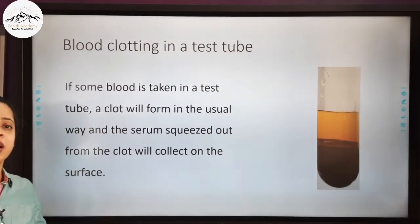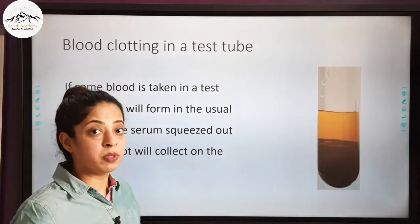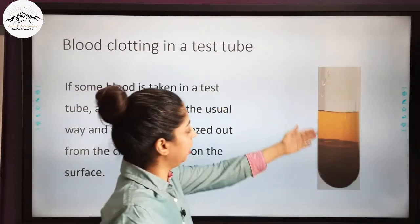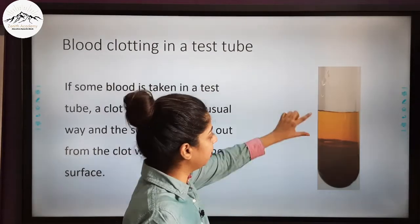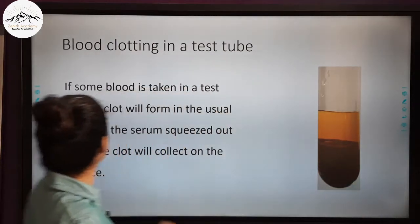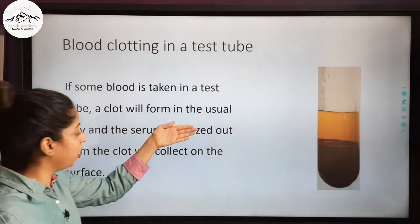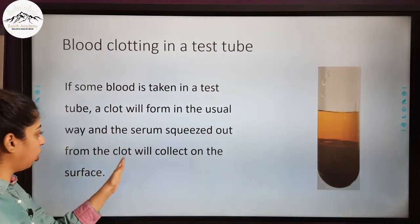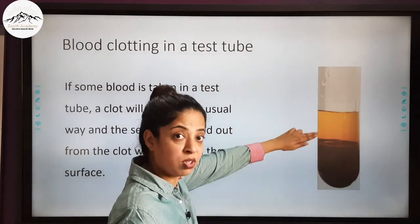You can observe clotting of blood even in a test tube. If some blood is taken in a test tube, a clot will form in the usual way, and the serum squeezed out from the clot will collect on the surface as a yellow-colored liquid.